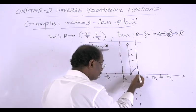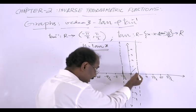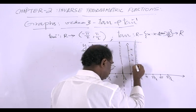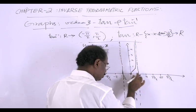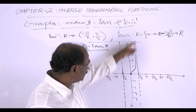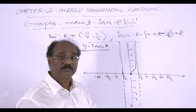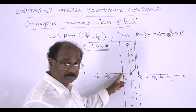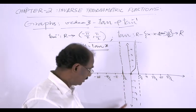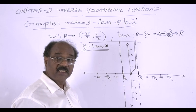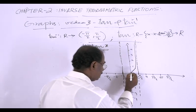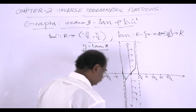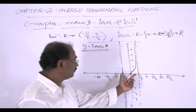Similarly, as x approaches −π/2 from the right, y approaches minus infinity. So the portion of the graph in this interval from −π/2 to +π/2 is a curve passing through the origin, going up to infinity on the right and down to minus infinity on the left.